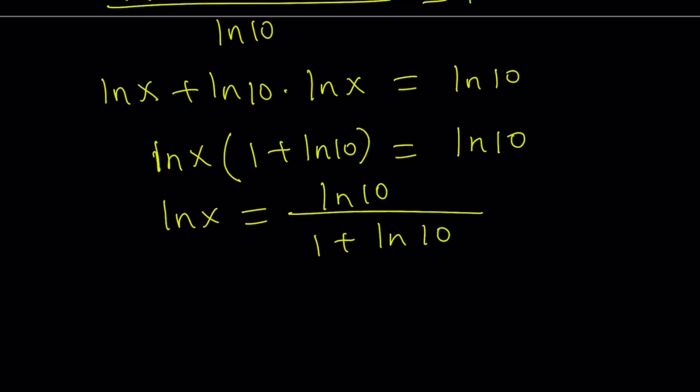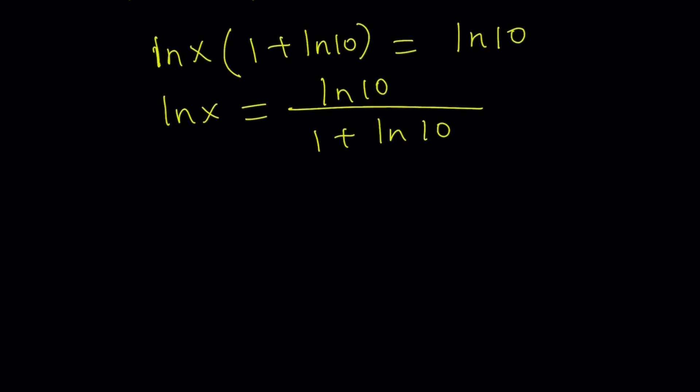So now, from here we can isolate ln x. That gives us ln 10 over 1 plus ln 10. And now we're trying to solve for x. But this is ln x. So how can I get x from here? I can do e to the power of both sides. So from here, x equals e to the power of ln 10 over 1 plus ln 10.